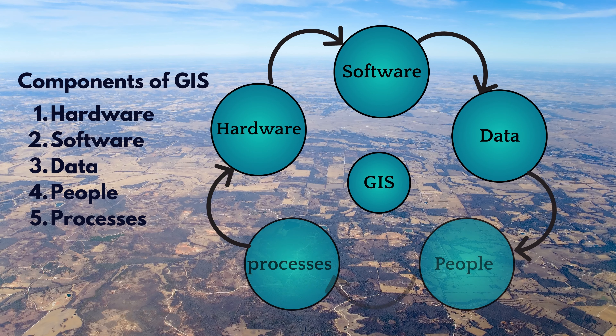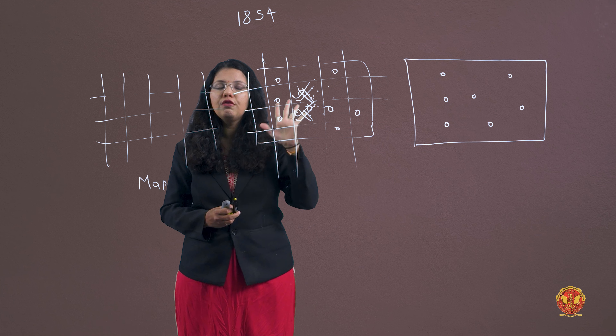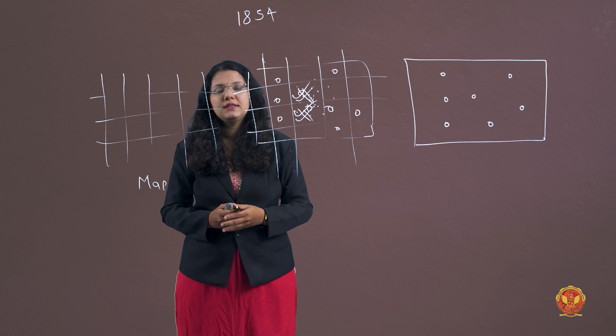Let's talk about the components of GIS. The components are generally of five types. There will be a total of five components: first is hardware, second is software, third is data, fourth is people, and fifth is process.